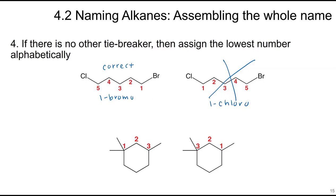In cyclic structures, apply the same numbering rules. For example, numbering that gives one, one, three is correct, while one, three, three is incorrect.